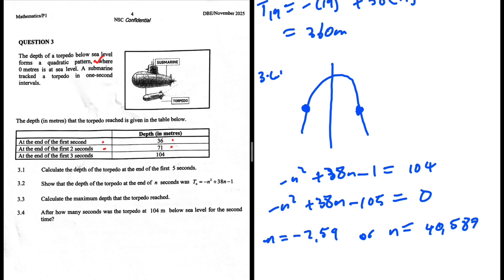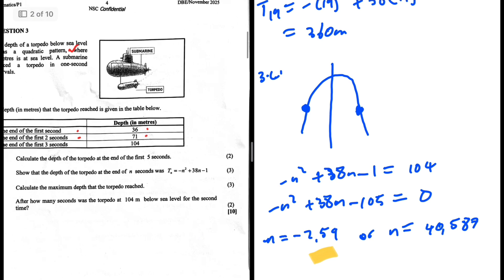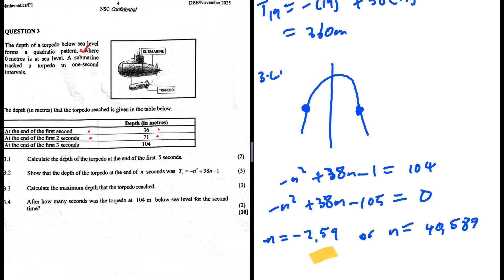I'm getting n equals minus 2.59 or n equals 40.587. I don't like that one of my answers is negative, because n is time, so how can time be negative? Let me just take a look at this and see if I'm making any mistake.